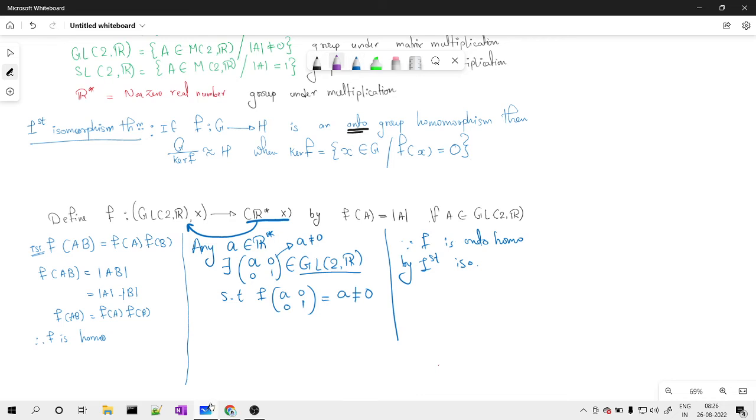By First Isomorphism Theorem, we know that my domain, that is GL(2,R) divided by the kernel of f, is isomorphic to the codomain, that is the range, that is R*.